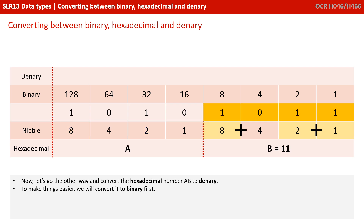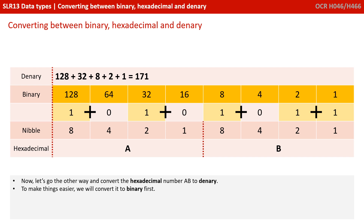We do exactly the same thing with B. The hexadecimal digit B needs to turn into four bits, or a nibble. B in hex is 11, so we want an 8, zero 4s, and a 2 and a 1: 8, 9, 10, 11. So now we have our binary equivalent of the hexadecimal AB, and that's 10101011. To convert that into denary, we add up the original binary weighting columns that have a 1 in: 128 plus 32 plus 8 plus 2 plus 1 is 171. So the hex number AB is 171 in denary.